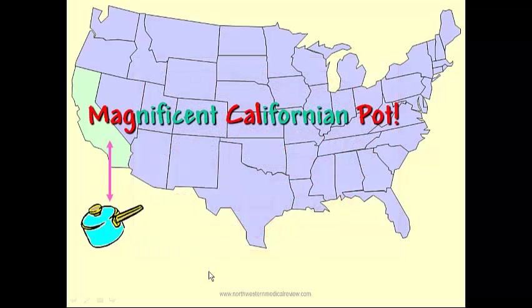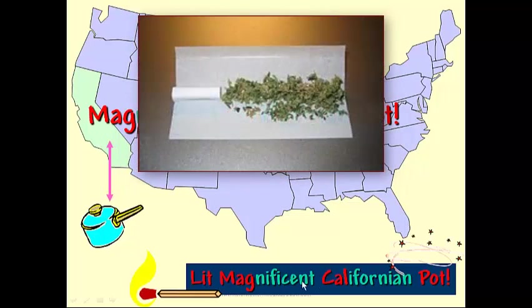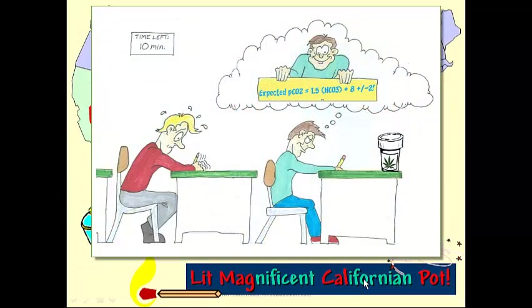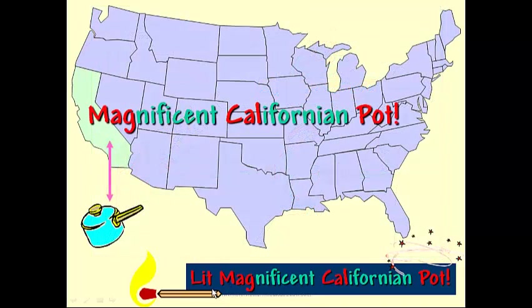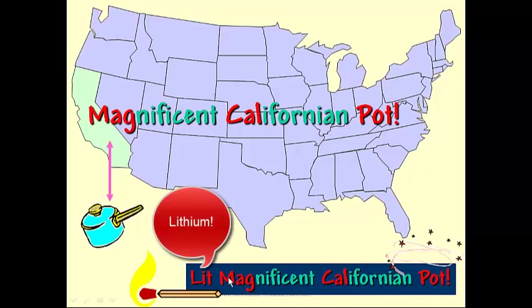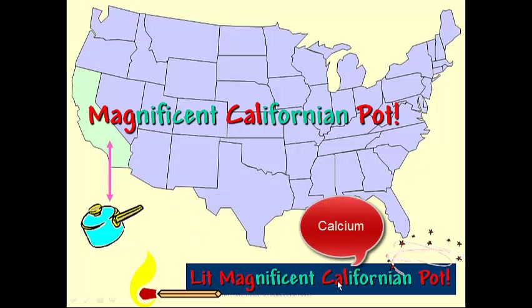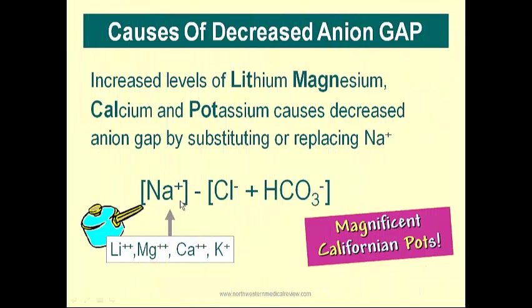Let me see, that magnificent Californian pot. Why do I say LET Magnificent Californian Pot? Because LET is lithium, magnificent is magnesium, Californian is calcium, and pot is potassium. These are the major cations that when they increase in the ECF, they take space away from sodium.